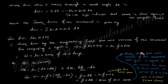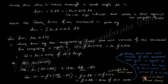The work done per unit volume of the material per cycle equals mu-naught times the area of the M-H curve, which is also equal to the area of the BH loop. The area of the BH loop therefore represents the work done. The unit is joules per cubic centimetre, and this energy loss appears in the form of heat.